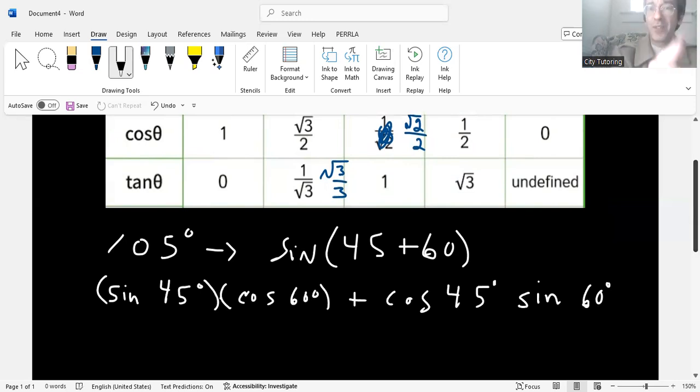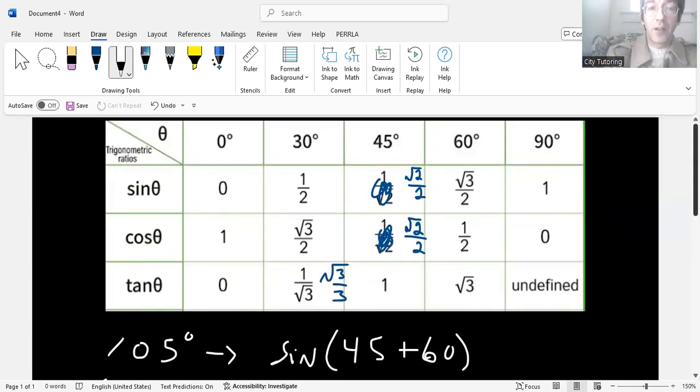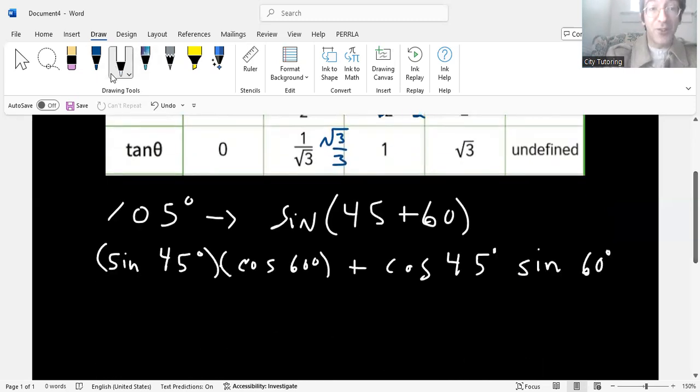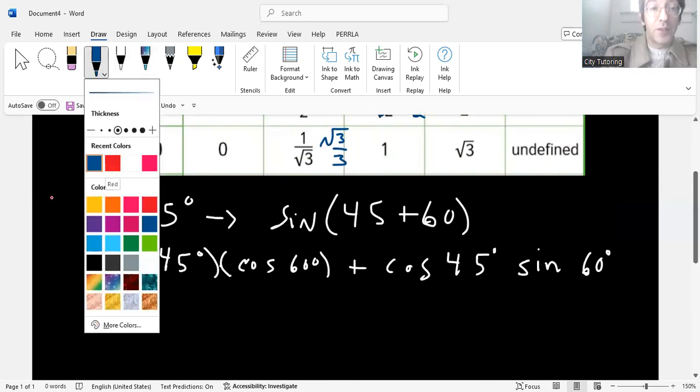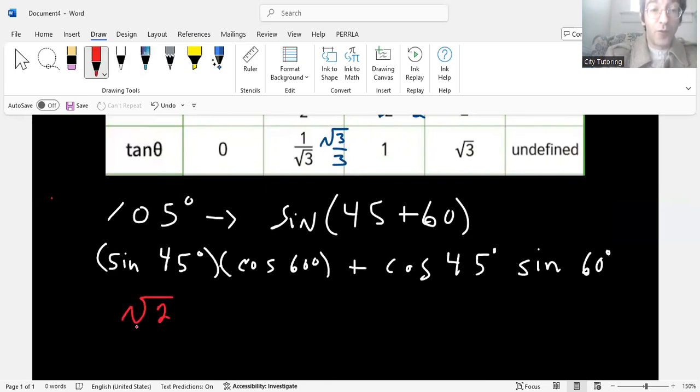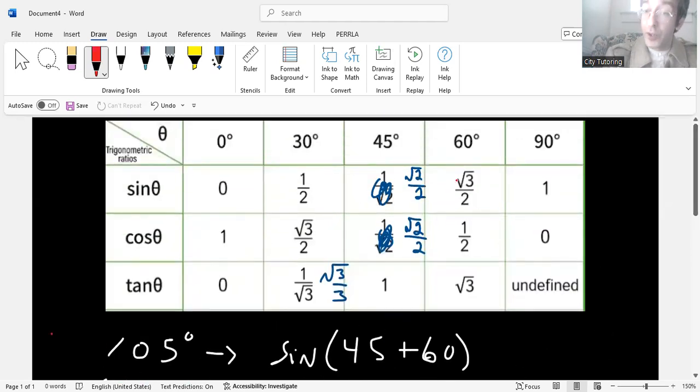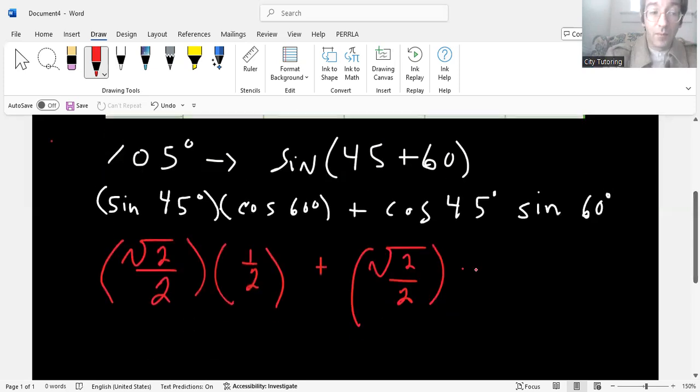You're going to do the cosine of 45 times the sine of 60 degrees. Now it makes your life so much easier because if you know these special cases, look at your table here. The sine of 45 degrees is actually radical two over two. So now you just put, you're basically just substituting at this point. So it's radical two over two. Multiply that by what? What's the cosine of 60 degrees? It's a half.